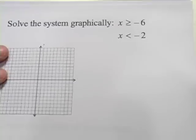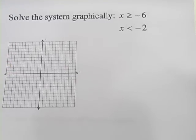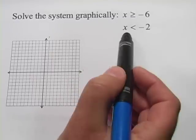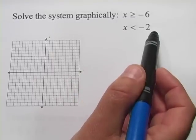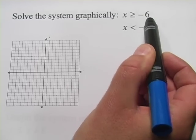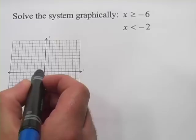We've got one more to do here. Now this one might throw you for a loop a little bit because there's no y in here at all. We've got x is greater than or equal to negative 6, and x is less than negative 2. So let's go ahead and try to graph x, the line x equals negative 6.